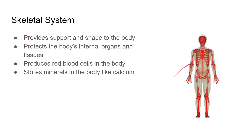Next, we're going to move on to the skeletal system. What does the skeletal system do? First and foremost, it provides support and shape to the body. When you stand up and look at yourself in the mirror, what is giving you that shape? What is making you look like you? It is your skeletal system. It's what gives your body the shape of a body.